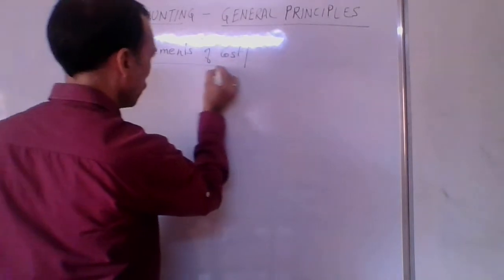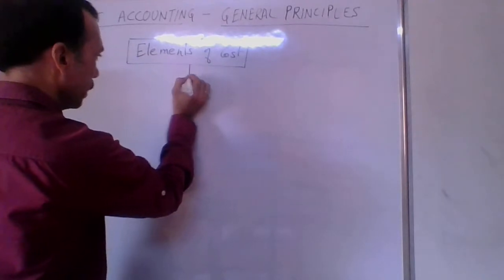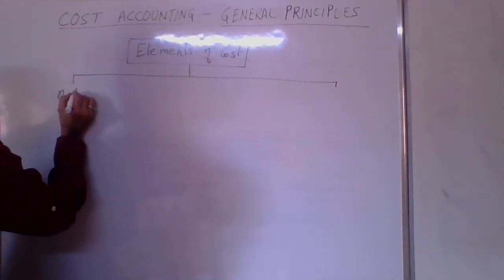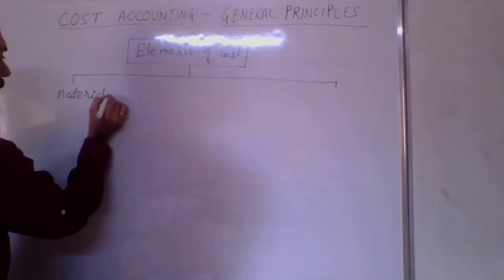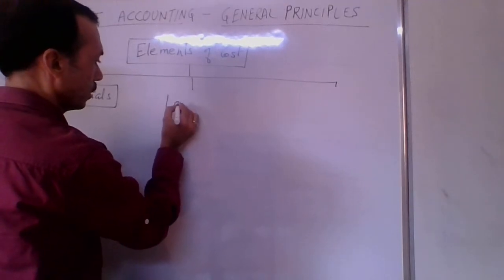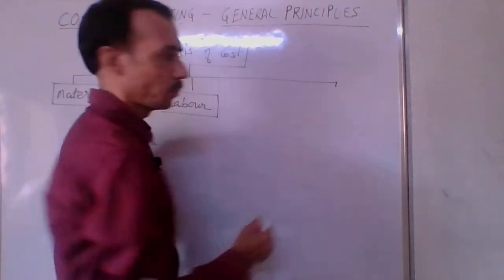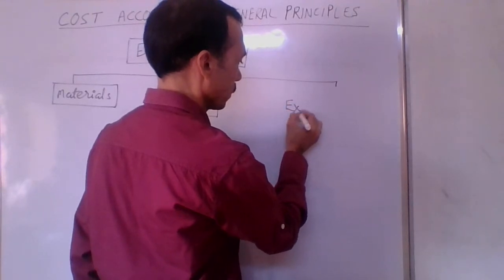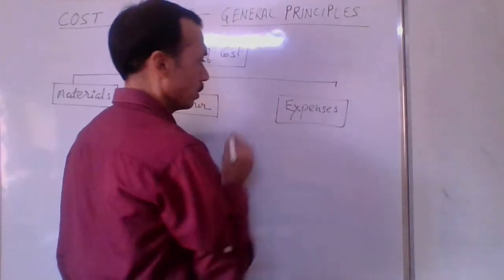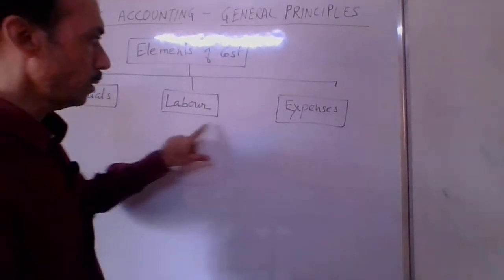The cost to produce any goods or services is basically divided into three parts: materials, labour, and expenses. These are the three elements of cost.